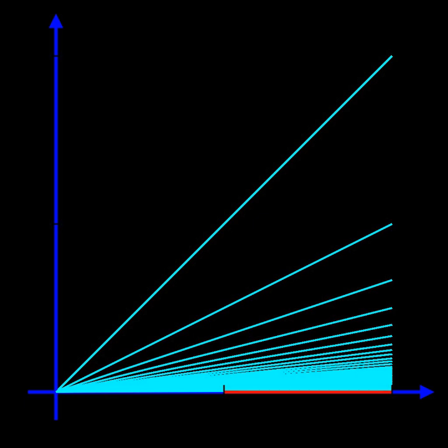The infinite broom is the subset of the Euclidean plane that consists of all closed-line segments joining the origin to the point as n varies over all positive integers, together with the interval on the x-axis.